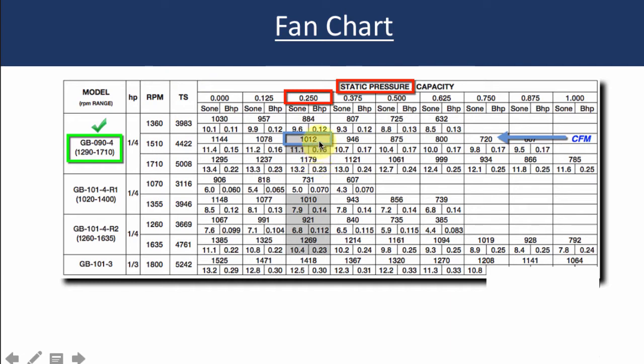Now the way they get more CFM using the same model, this model will do 884 up to 1179. How they do that is changing the speed of the fan, revolutions per minute, RPM. So at the smaller CFM it's going slower. They speed the RPMs up, speed up the fan, they get more CFM at the same static pressure.